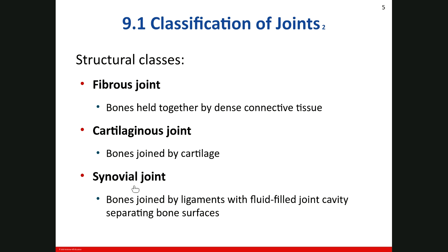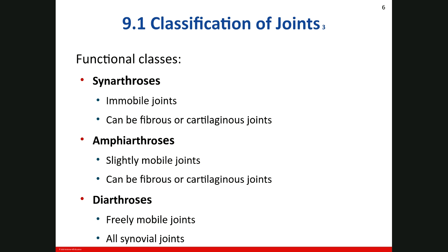When classifying joints by their function, we have three types. The first is synarthrosis, which is an immobile joint. Two types of fibrous joint and one type of cartilaginous joint fall in this group. The second is amphiarthrosis, a slightly mobile joint; one type of fibrous and one type of cartilaginous joint are in this group. The third is diarthrosis, a freely mobile joint. All synovial joints are diarthrosis.